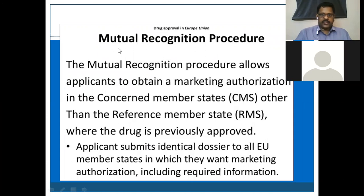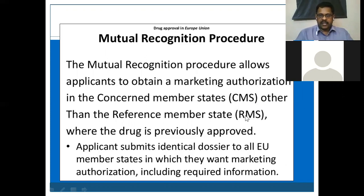Another procedure is the Mutual Recognition Procedure. It allows an applicant to obtain a marketing authorization in a concerned member state (CMS) other than the reference member state (RMS). The reference member state is the country where you did clinical trials and got approval. The concerned member state is another country under the European Union where you are going to market.